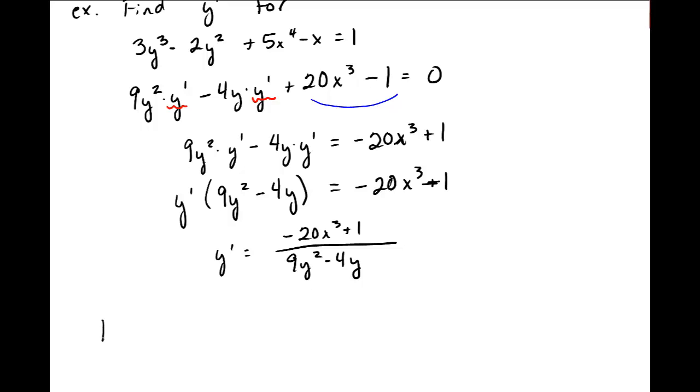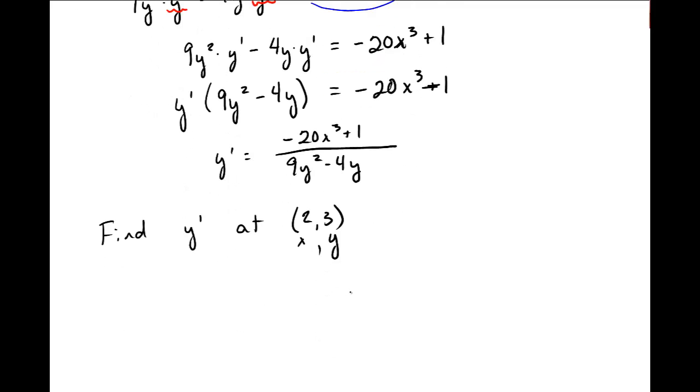Now, if I want to find y prime at a point, let's say, at the point (2, 3), this is an xy point that I'm given implicitly. And I can plug that into this derivative because I have x's and y's there.